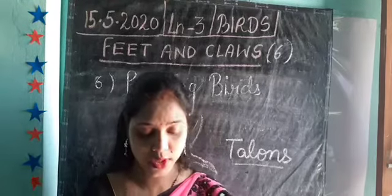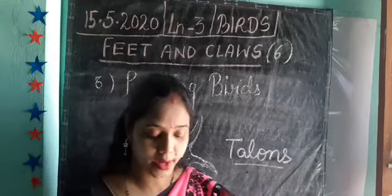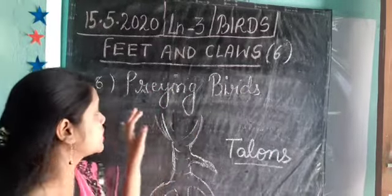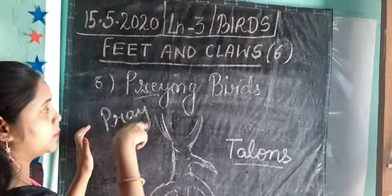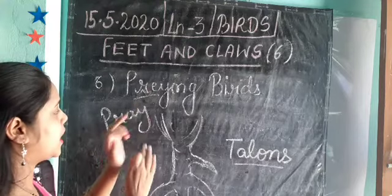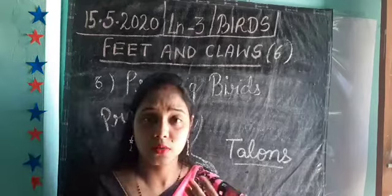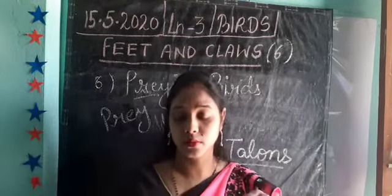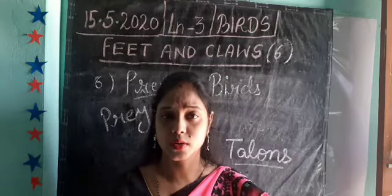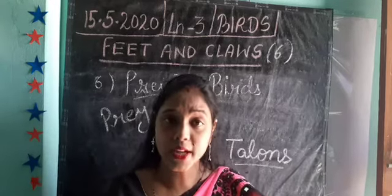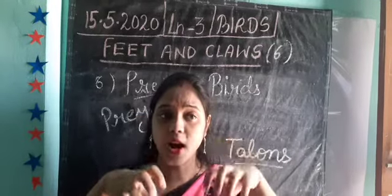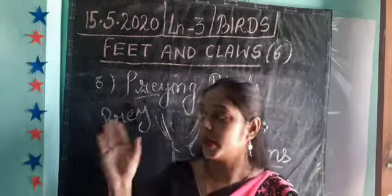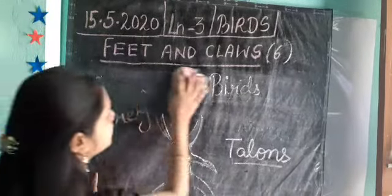Birds of prey use their talons to catch live rats, toads, and other small animals. Note the spelling: 'prey' means to hunt — 'shikhaar karna' — so these are birds of prey, meaning hunting birds. They catch their prey, such as rats, frogs, toads, and other small insects, holding them very tightly in their sharp claws even while flying.